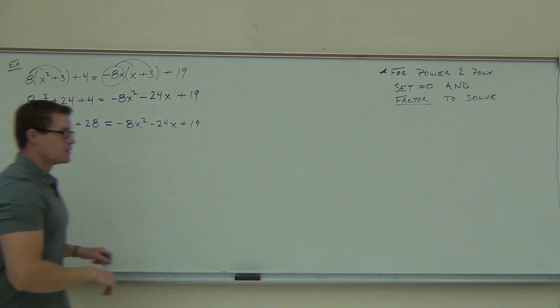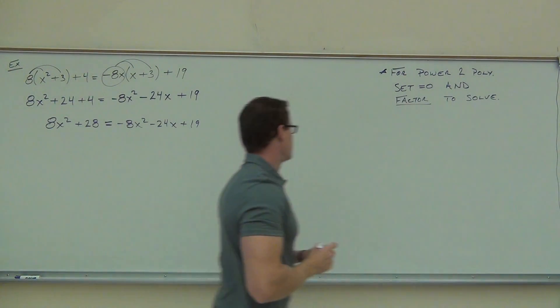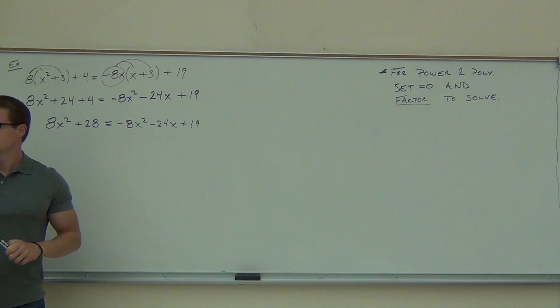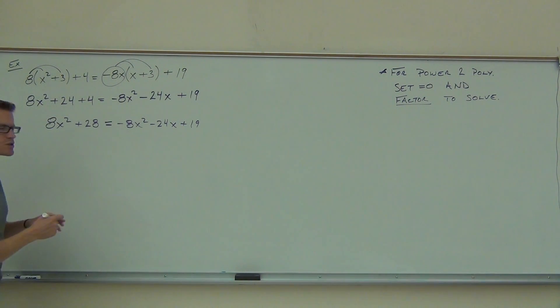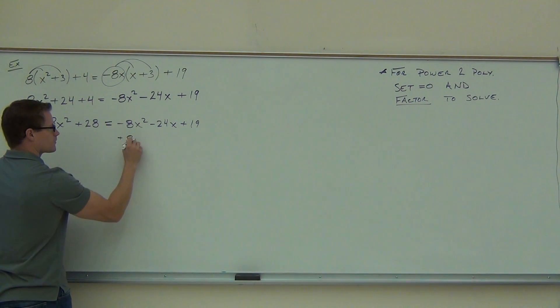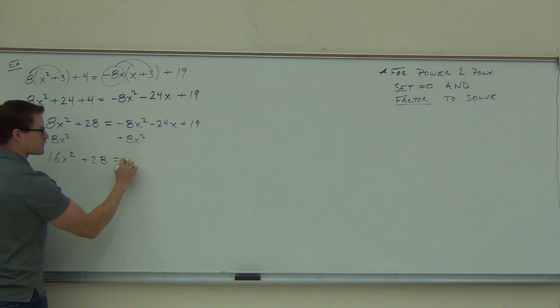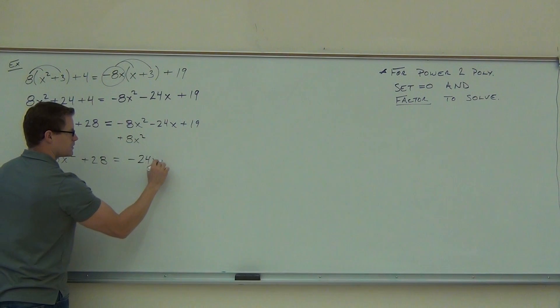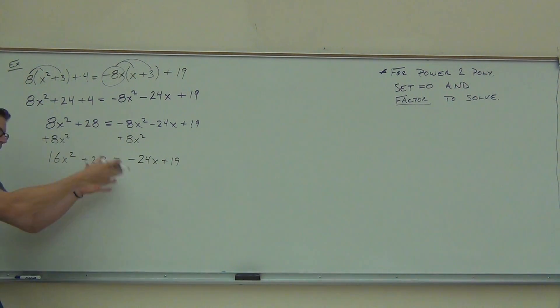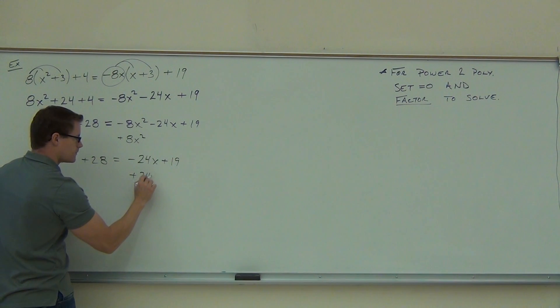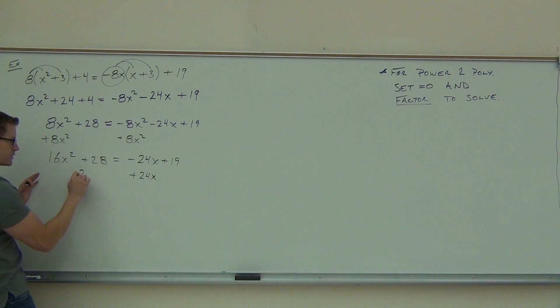And we'll start moving all this stuff. By the way, can you do this all at once? If you show your steps you can, that's fine. Just don't lose yourself on it. I go step by step. That way I don't get lost. So we'll get our 16x². We still have this plus 28. We have our negative 24x plus 19. We'll continue. The next thing we've got to do, we've got to add that 24x, so we'll put this in the correct order and get 16x² + 24x + 28.